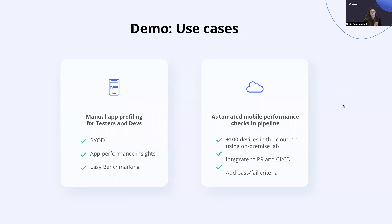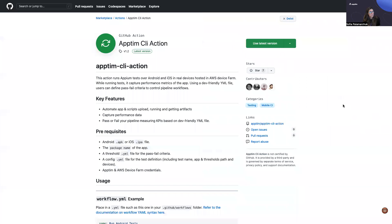Today I'm going to focus on how to integrate Apptim into a pull request and run it from CI/CD. I'm going to be using GitHub, and as part of the demo, Apptim will install the app that I'm testing on real devices in the cloud using AWS Device Farm. I'm also going to be adding some pass-fail criteria to the metrics. So let's jump into the demo. For GitHub, we actually have a GitHub Action available in the marketplace.